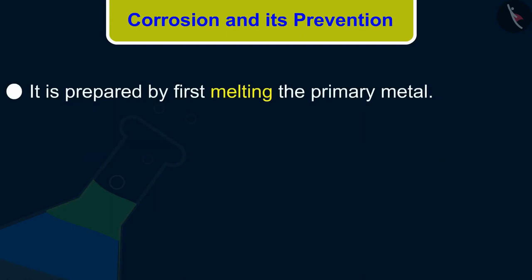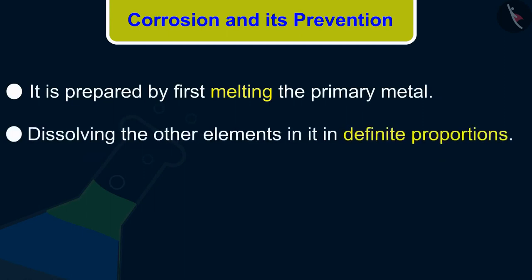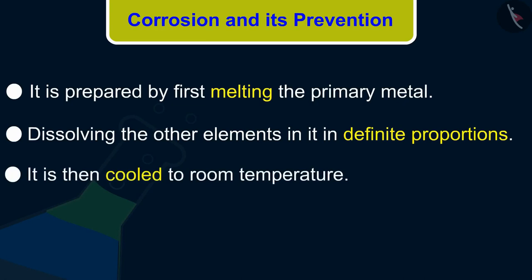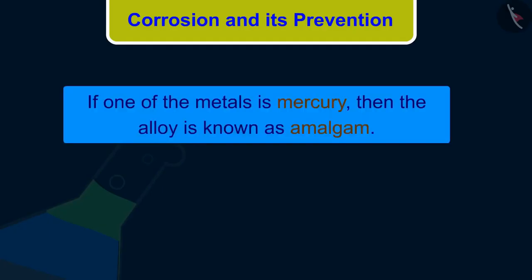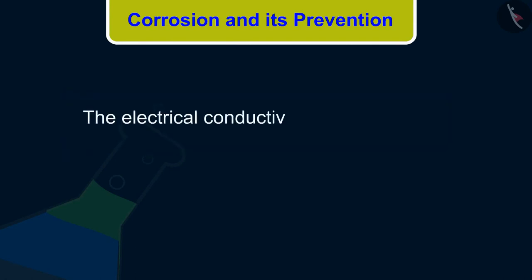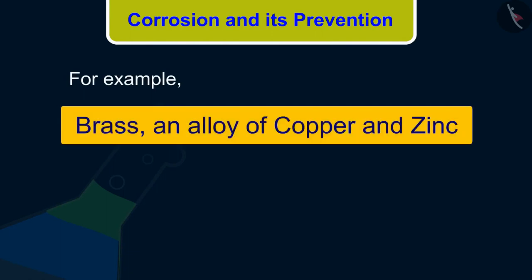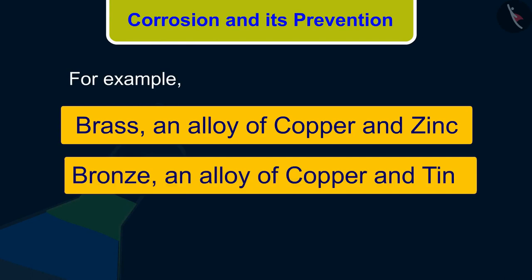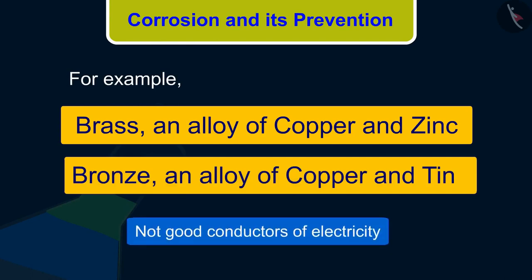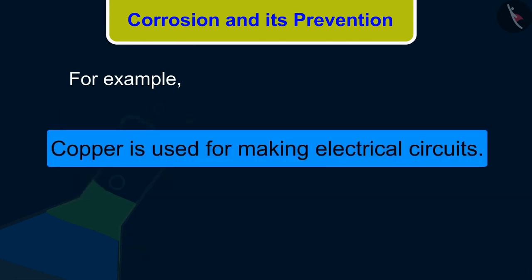An alloy is prepared by first melting the primary metal and then dissolving the other elements in it in definite proportions, and then cooling it to room temperature. If one of the metals is mercury, the alloy is known as amalgam. The electrical conductivity and melting point of an alloy is less than that of pure metals. For example, brass — an alloy of copper and zinc — and bronze — an alloy of copper and tin — are not good conductors of electricity, whereas copper is used for making electrical circuits.